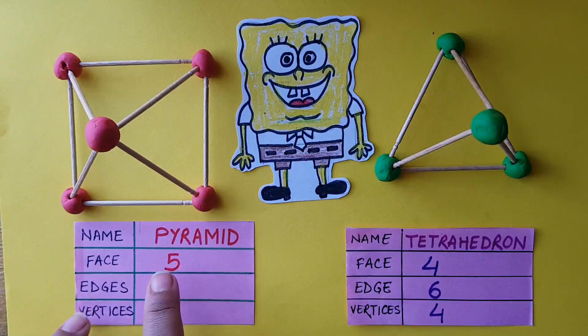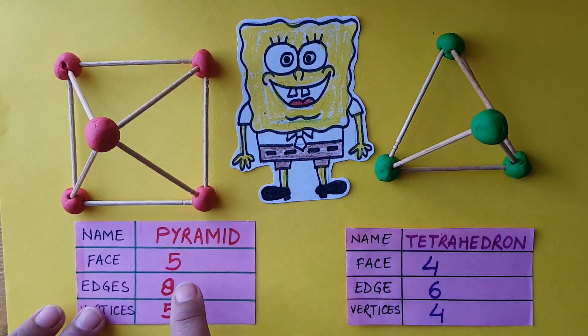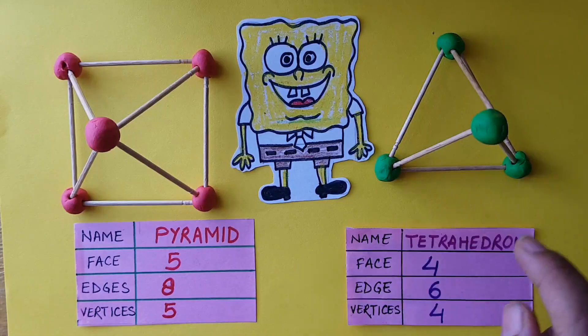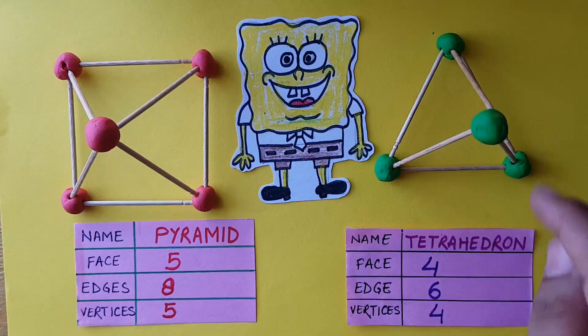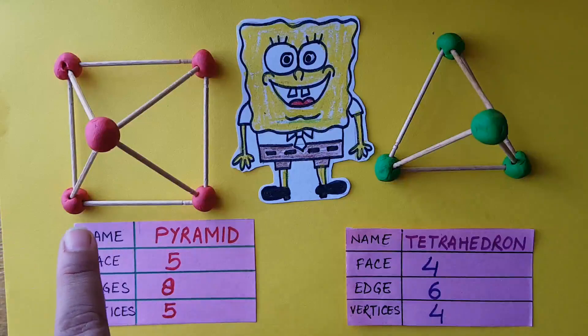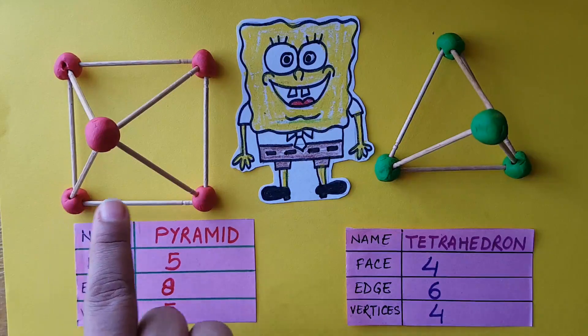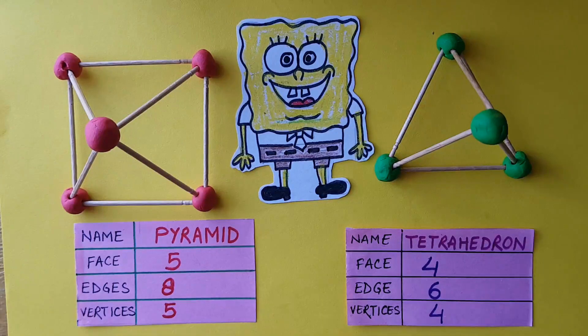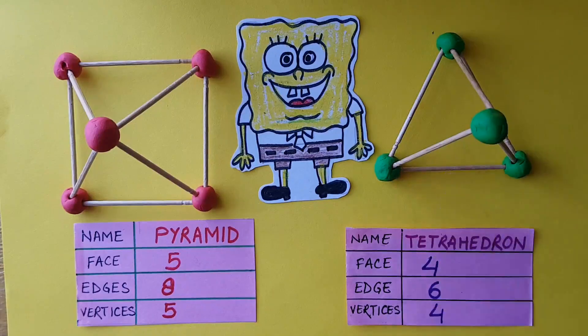The faces of a pyramid is 5 and the faces of a tetrahedron is 4. If you can see, in the pyramid, the base of this pyramid is made with a square.